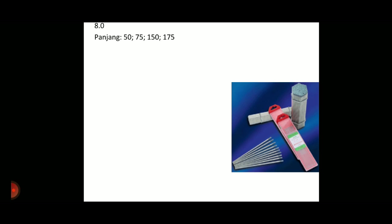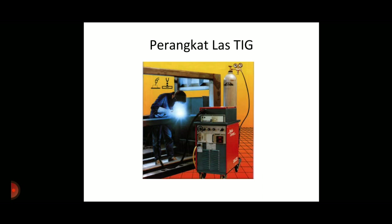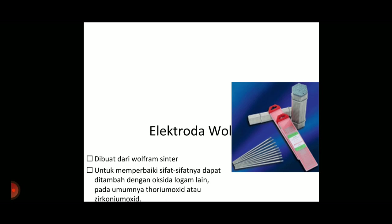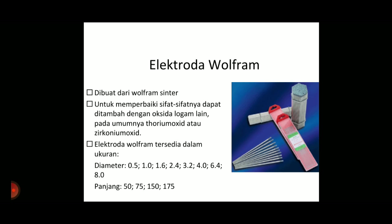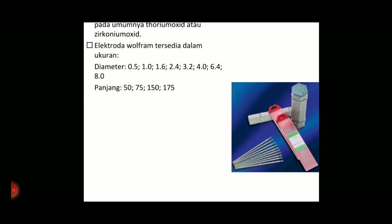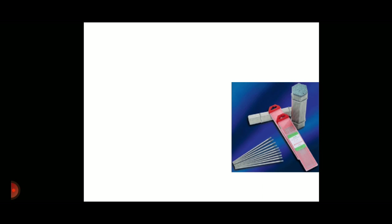Gambarnya seperti ini. Ini elektrodanya kecil-kecil. Diameter 0,5; 1; 1,6; 2,4; 3,2; 4,0; 6,4; 8,0. Panjangnya 50 mm, 75, 150, sampai 175 mm. Pendek-pendek, kecil - 0,5 mm ada diameternya. Paling yang kita gunakan umumnya nanti 1 mm, diameter 1 mm.